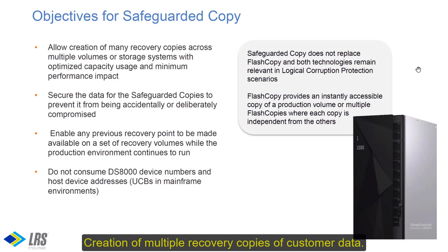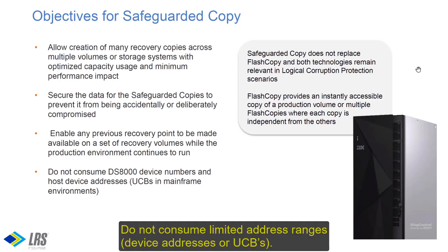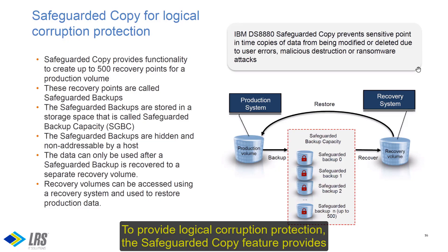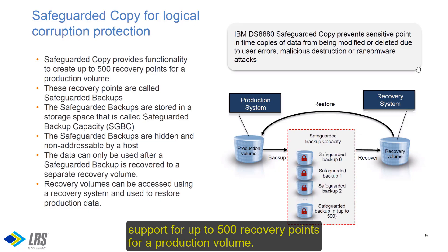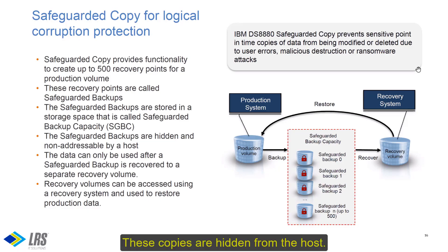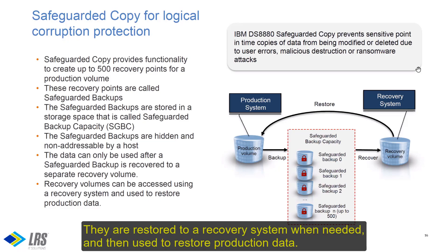The design objectives for Safeguarded Copy are: number one, the creation of multiple recovery copies of customer data; number two, securing those copies to ensure they cannot be compromised; number three, the easy ability to recover from any of those previous copies without impact to production; and number four, a design that does not consume limited resources like address ranges or UCBs for a mainframe customer. To provide logical corruption protection, the Safeguarded Copy feature supports up to 500 recovery points for a given production volume. These recovery points are called Safeguarded Copies. They are hidden from the host server, don't consume device addresses or UCBs, and are restored to a recovery system when needed to restore production data.